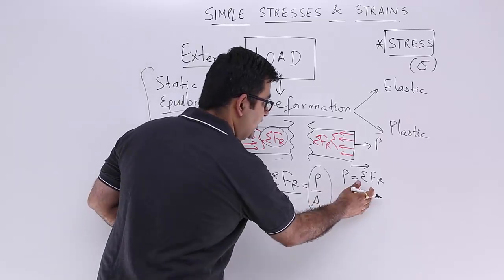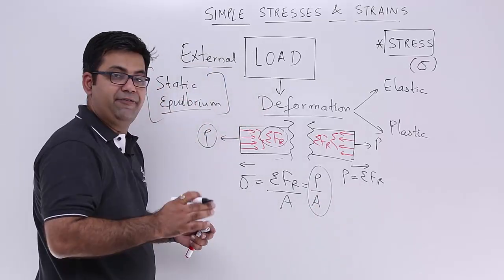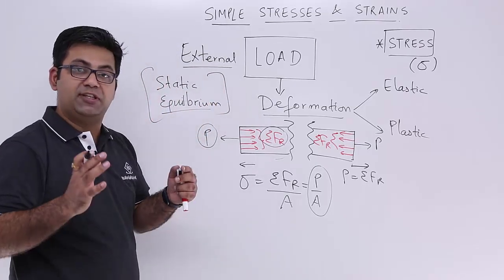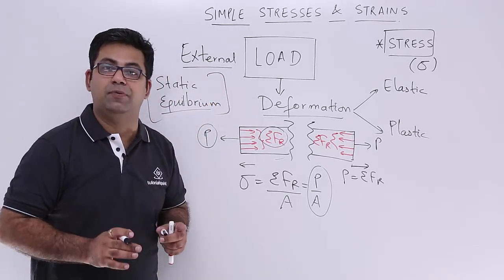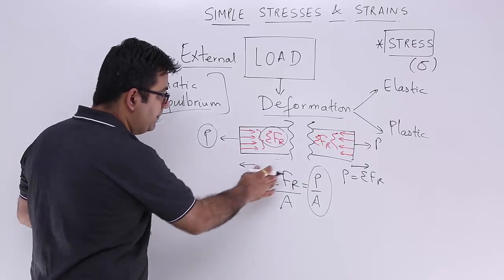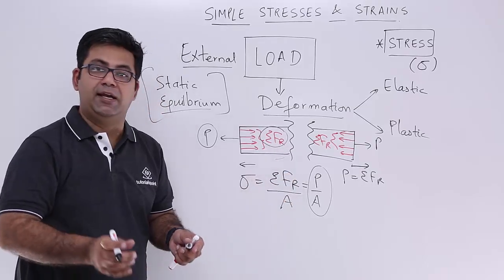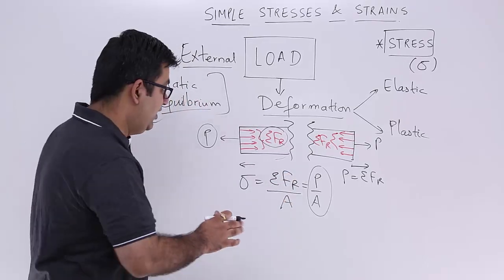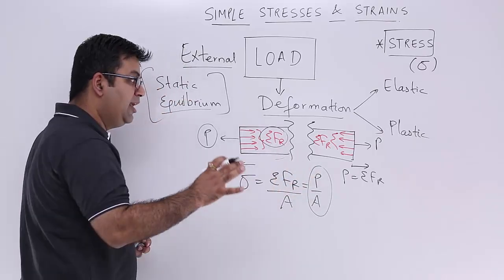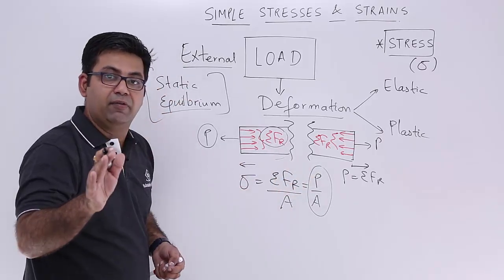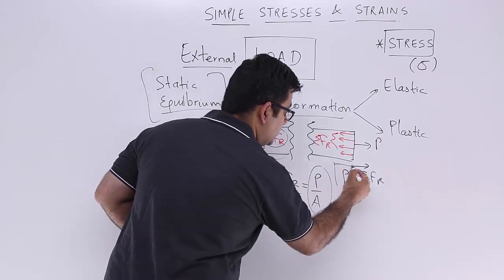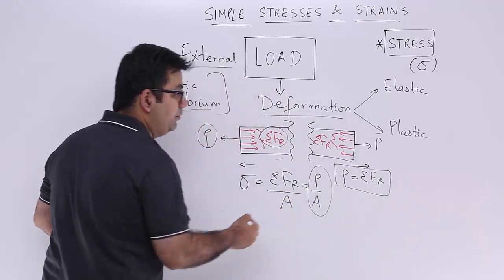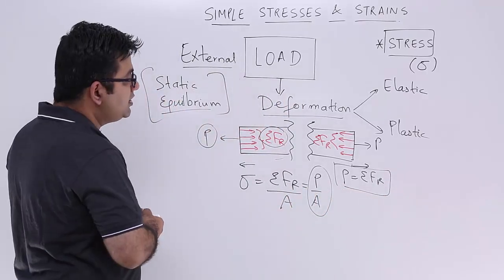So P equals Σfr, and this is the formula you would see in almost every textbook. It is actually Σfr / A, and because this body is in static equilibrium we can substitute to write sigma = P / A. This is how we mathematically define stress.